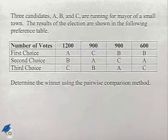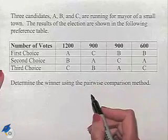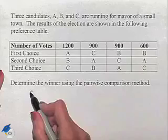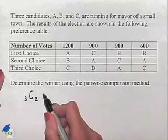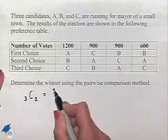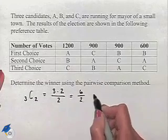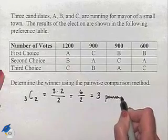This time we want to determine the winner using the pairwise comparison method. Notice that we have three candidates and we're going to pick those three candidates pairwise. So we're going to be looking for a combination of three items taken two at a time. We can find that by multiplying three times two and then dividing by two. So we're going to have six divided by two equals three different pairings that we're going to have to consider.